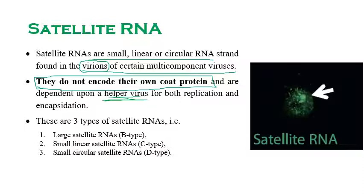So far, three types of satellite RNA have been discovered: large satellite RNA (B-type), small linear satellite RNA (C-type), and small circular satellite RNA (D-type).